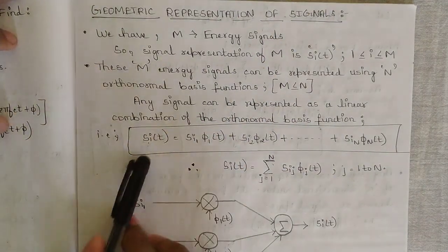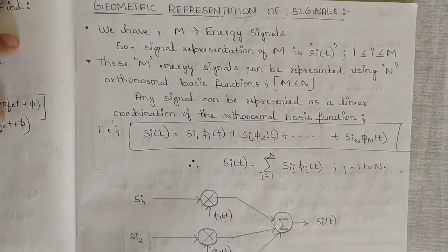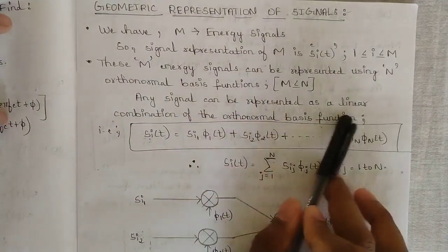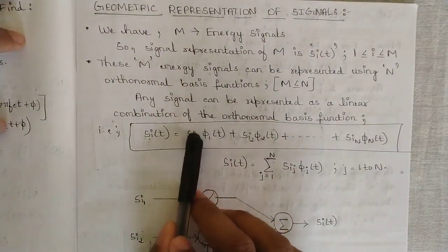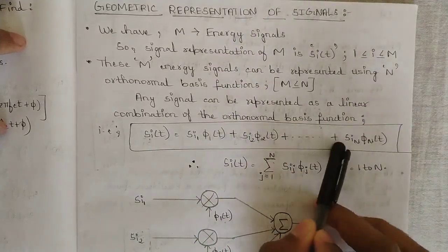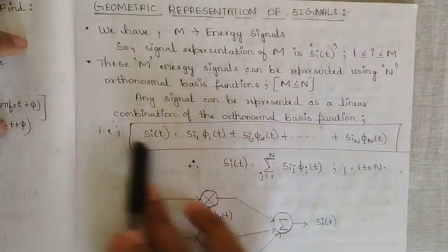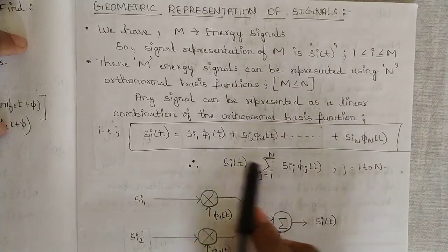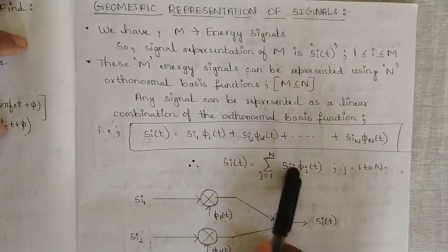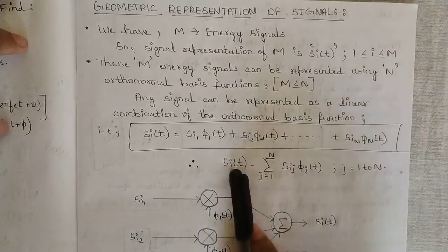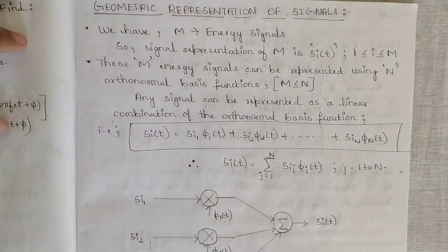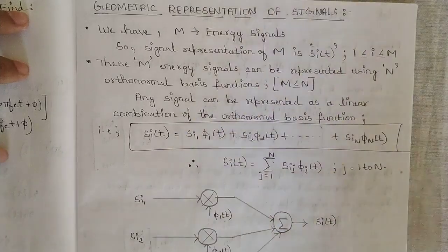Any signal s_I of t can be represented in terms of orthonormal basis functions as: s_I of t equals s_I1 phi_1 of t plus s_I2 phi_2 of t, and so on up to s_In phi_n of t. In short, s_I of t equals summation from j equal to 1 to N of s_Ij times phi_j of t, where j varies from 1 to N. This is the key expression for s_I of t.